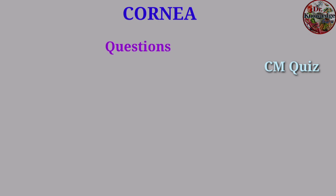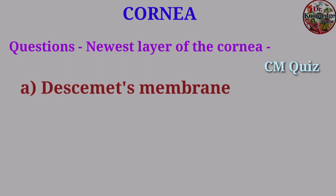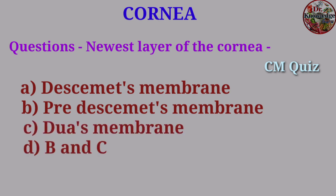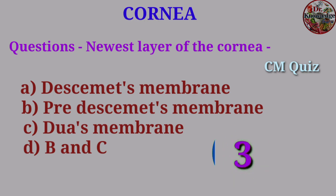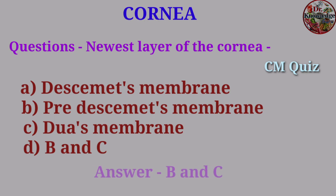Question: Newest layer of the cornea is — A. Descemet's membrane, B. Pre-Descemet's membrane, C. Dua's membrane, D. B. Incerca. Answer: Dua's membrane (also known as Pre-Descemet's membrane). Know about the cornea layers.